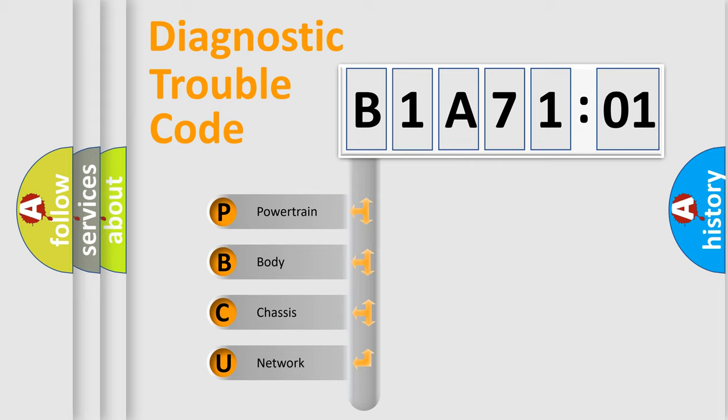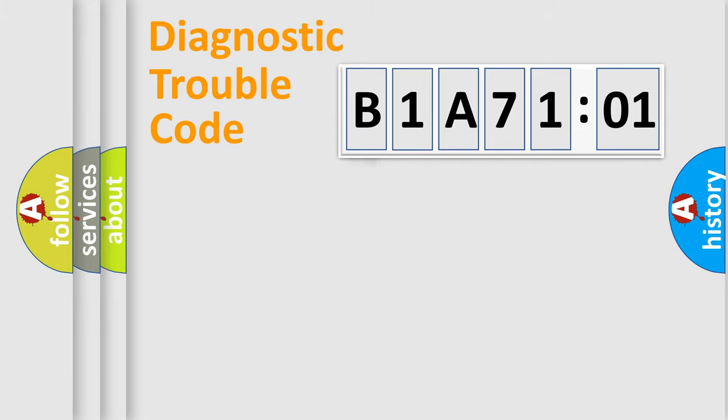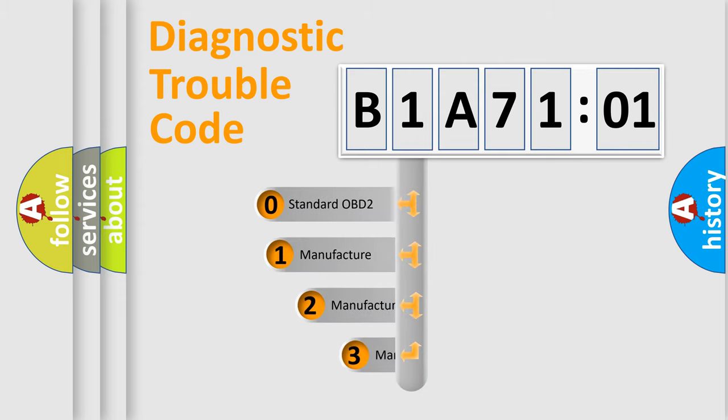We divide the electric system of automobile into four basic units: Powertrain, Body, Chassis, and Network. This distribution is defined in the first character code.